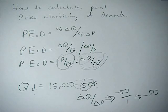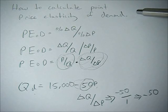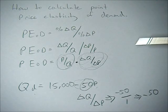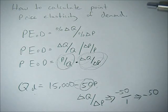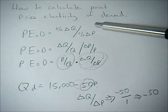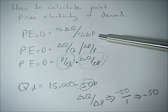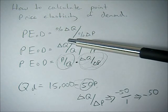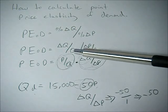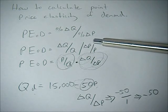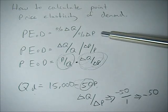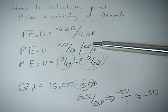This video goes over how to calculate the point price elasticity of demand. It's very similar to calculating the price elasticity of demand, but instead of being given two different points, you're given one point and a demand function, and you're trying to calculate the price elasticity of demand at that one point. To get the equation, we start with the same equation as before: percent change in quantity over percent change in price, which equals the change in Q over Q divided by the change in P over P.